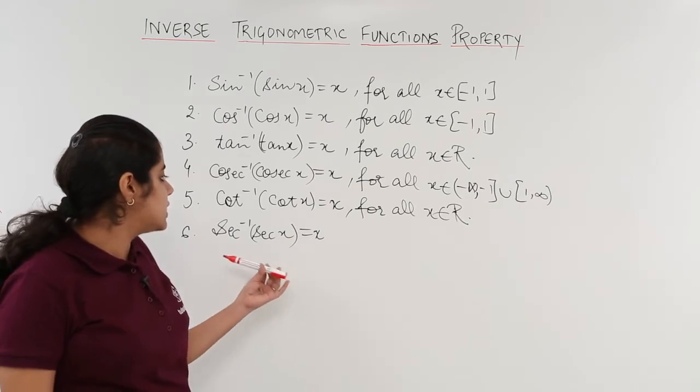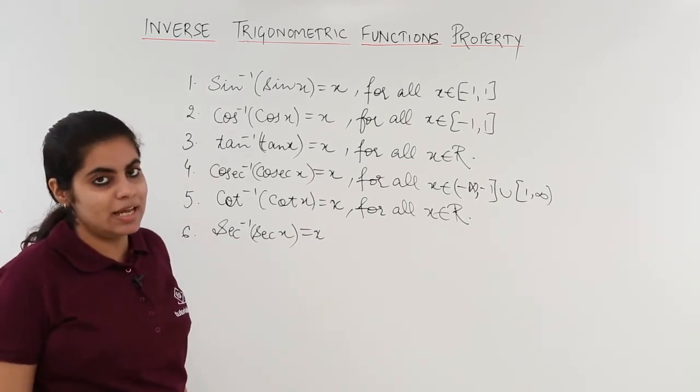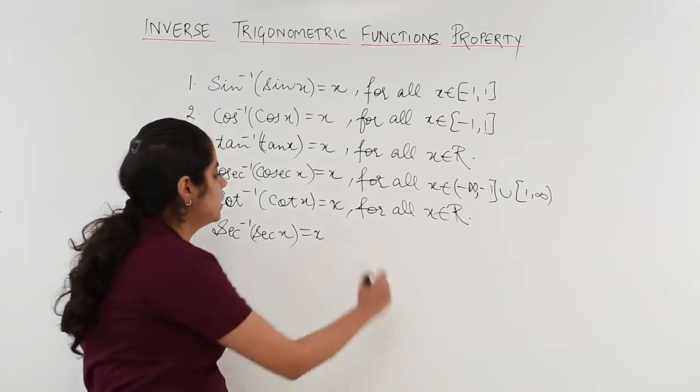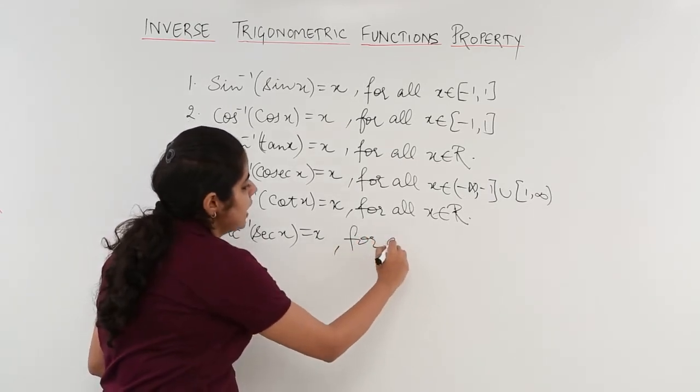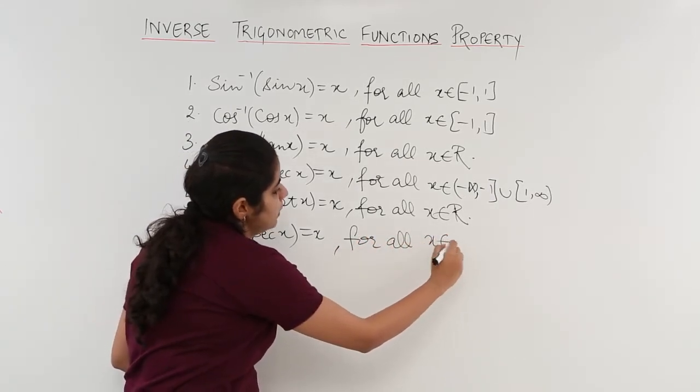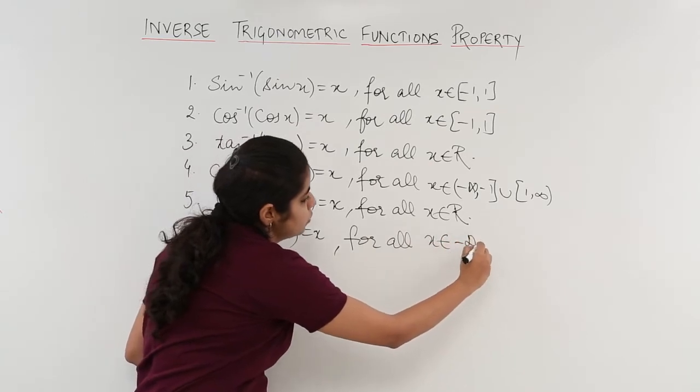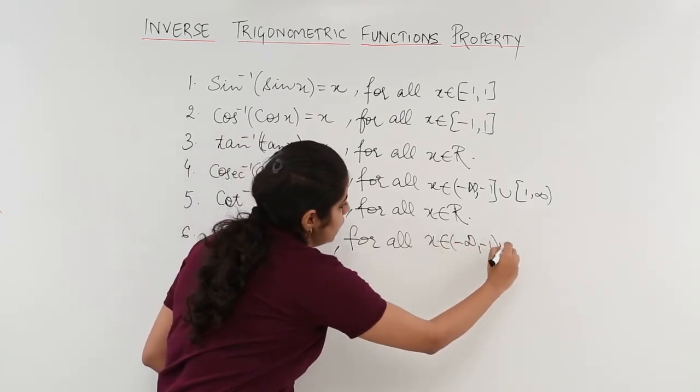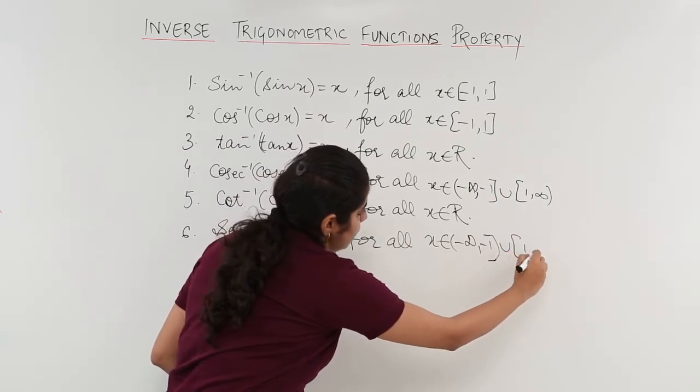Last but not the least, secant inverse secant x. Secant and cosecant follow the same principle. So the answer is x for all x belongs to minus infinity to minus 1, union 1 to infinity.